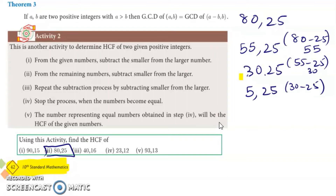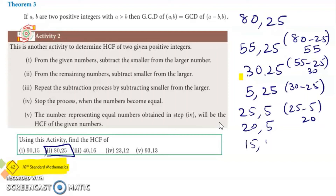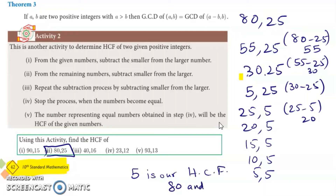Now 25 is the bigger number, so we take 25 minus 5, which gives 20. So we have 20 and 5. Repeat the same process: we get 15 and 5, then 10 and 5, then 5 and 5. So 5 is our highest common factor for 80 and 25.